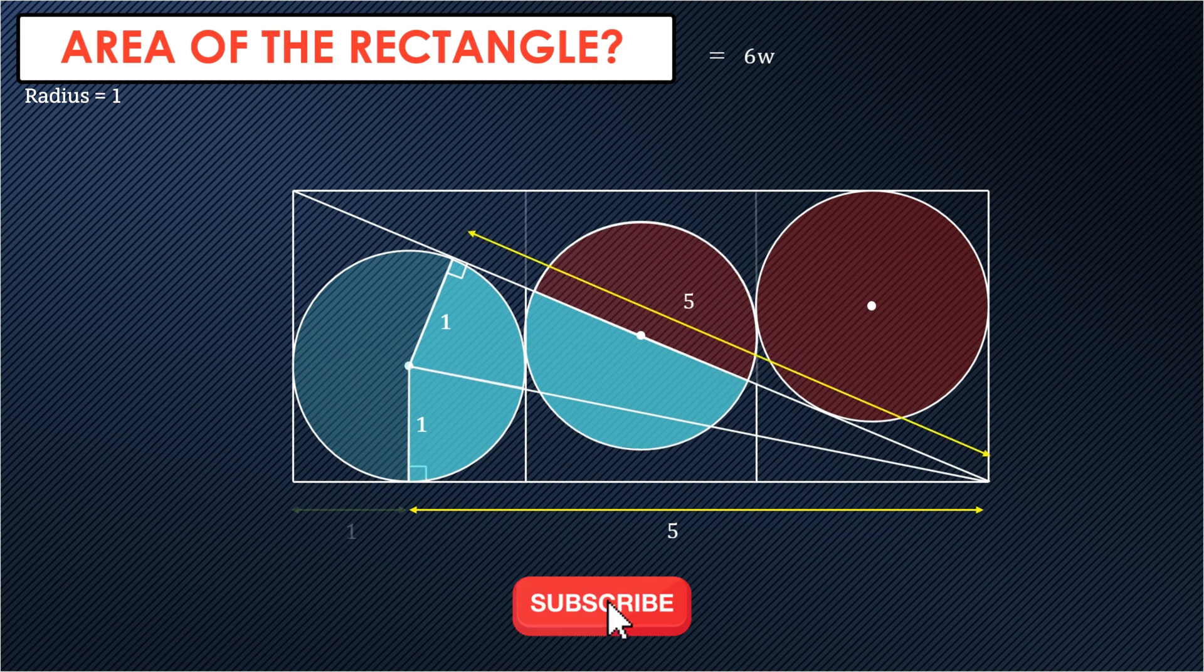So that means that we have a length of five for the base of the top triangle. From the center of the circle, we can extend a line up, which we call Y. And we can actually create another right triangle. In this right triangle, we have a hypotenuse of Y, length of one, and the remaining side, we can call X.